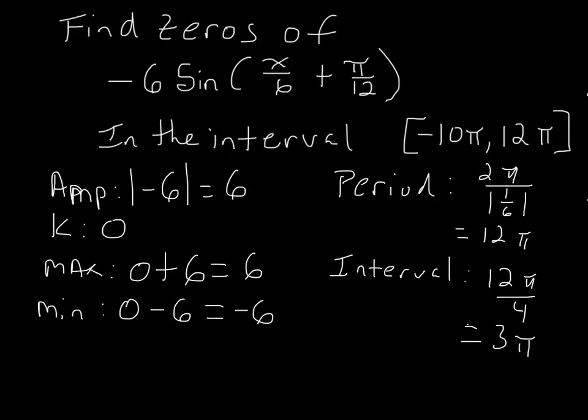So I have all my points of interest here. Now I'm going to find the domain. Remember for the domain, I want to put my transformation in the old domain, and I will solve for x. So I'm going to subtract π over 12 from both sides. So this is negative π over 12, and I have x over 6.